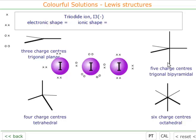And that means that the ionic shape is linear with a bond angle of 180 degrees. Remember, the electronic shape was trigonal bipyramidal.